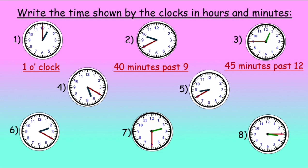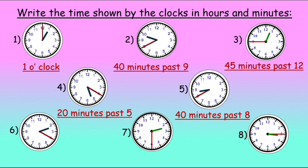The next one — the minute hand is on 4 and the hour hand is between 5 and 6, so the time is 20 minutes past 5. The next one is 40 minutes past 8. Next is 20 minutes past 2.